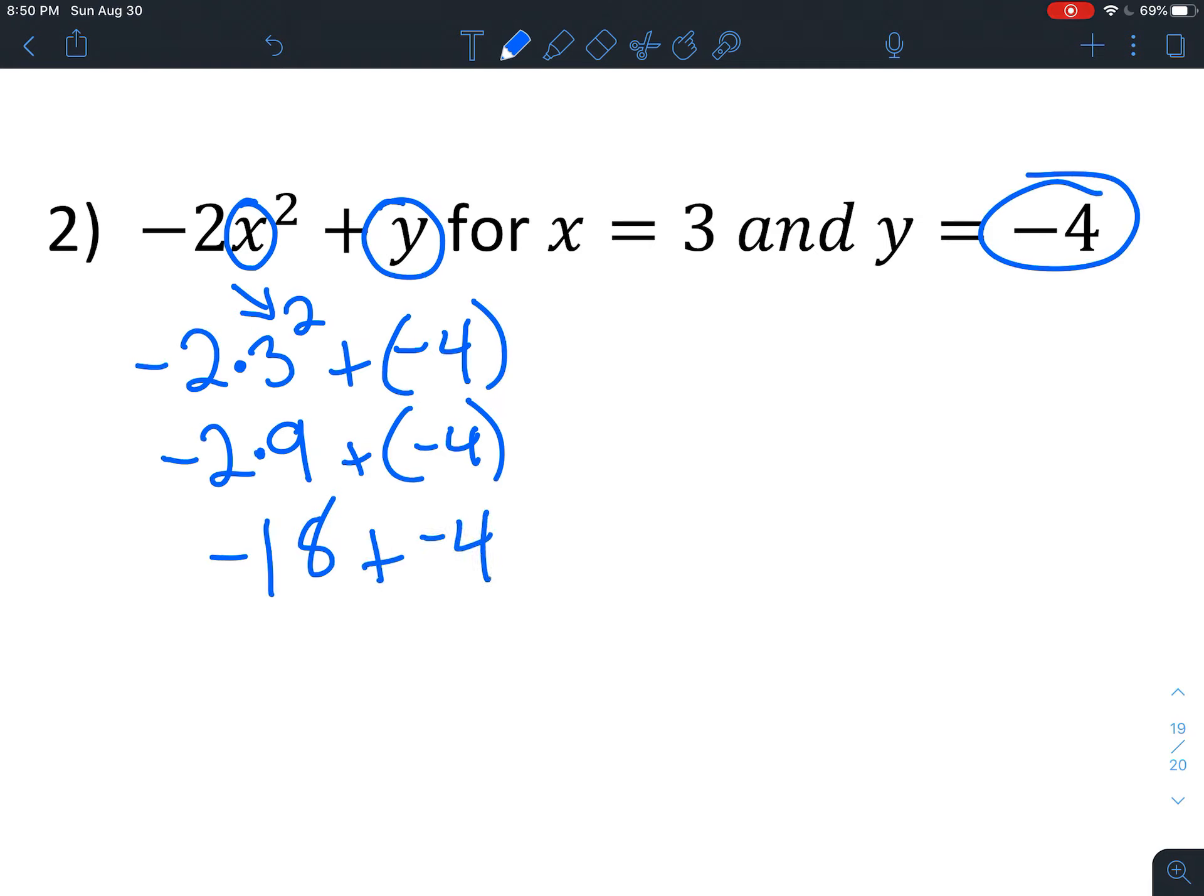Signs are the same which means you add. And think about it for a second. Negative or positive? It is negative because we have basically 18 negatives and we're adding 4 more negatives. So now we have 22 negatives.